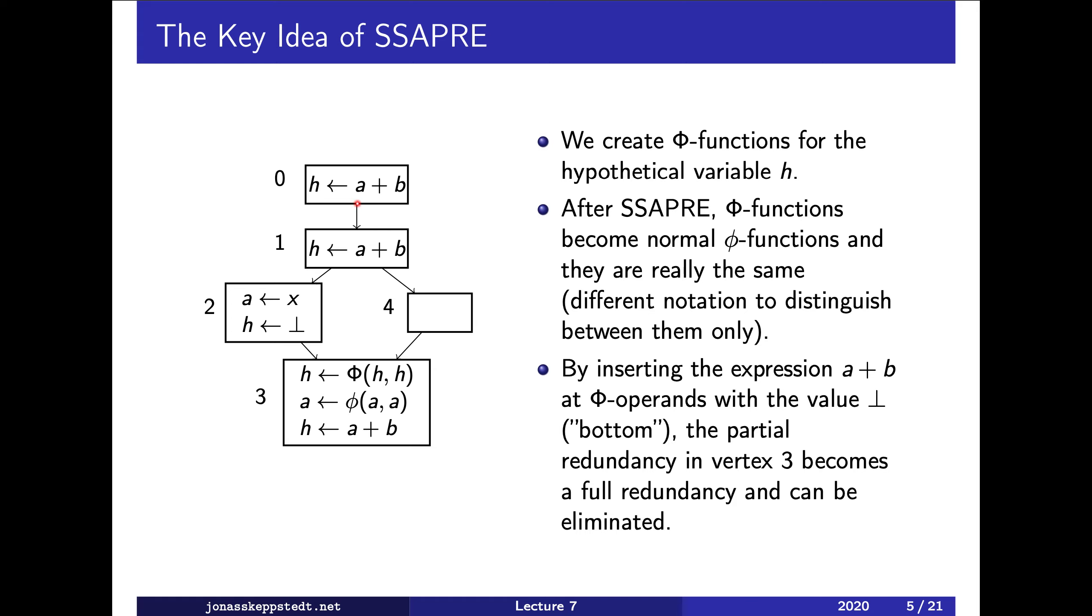Okay, so the reason why this is called H is that this is a hypothetical variable, and when we compute this expression, we simply save the expression to this variable there, there, and there. And also here, what we do is we destroy the value of a plus b since we overwrite a, and what we actually do, what is done in SSA PRE, is to invent a new value called bottom.